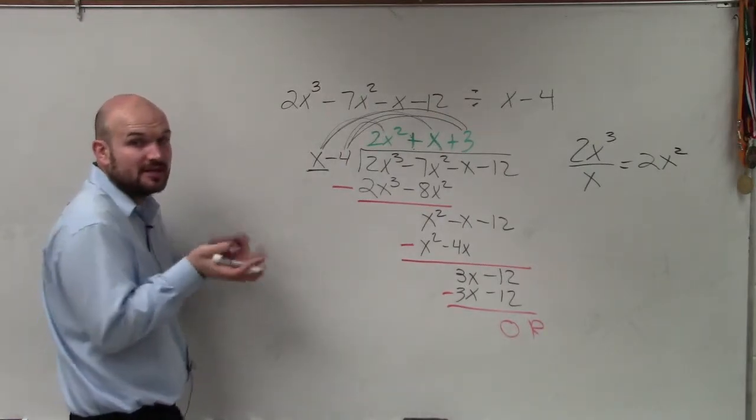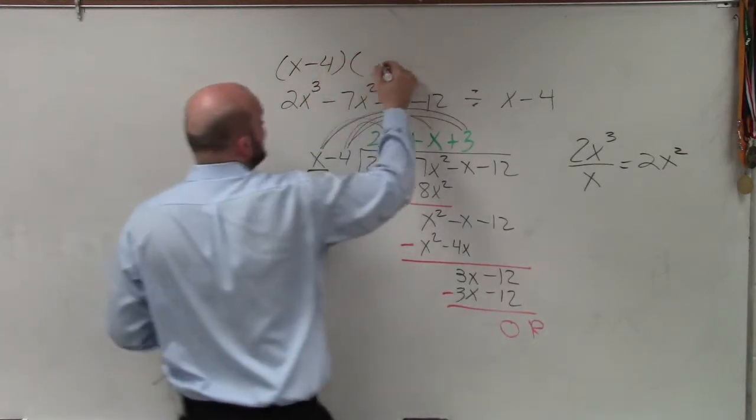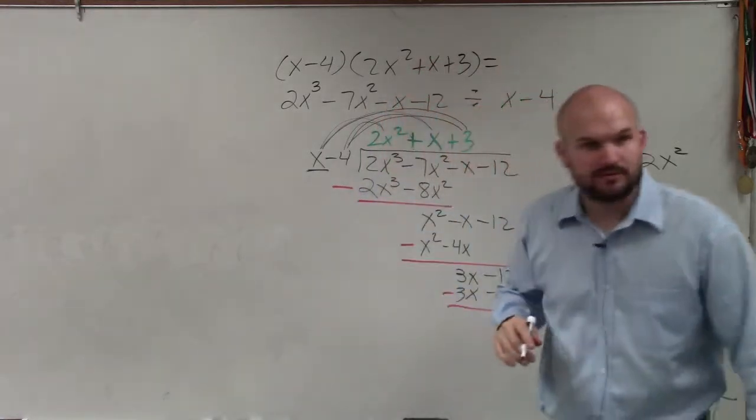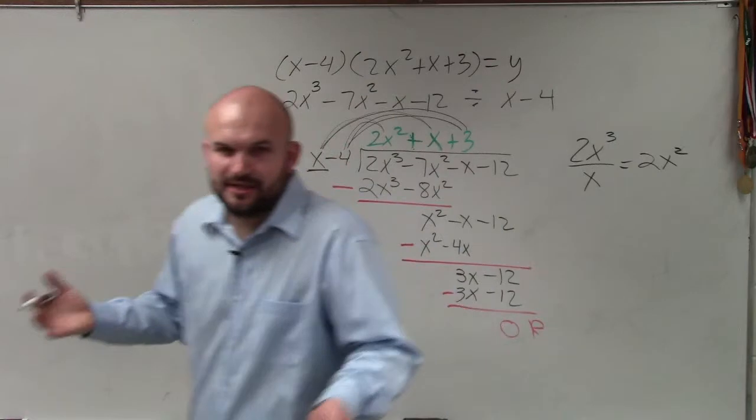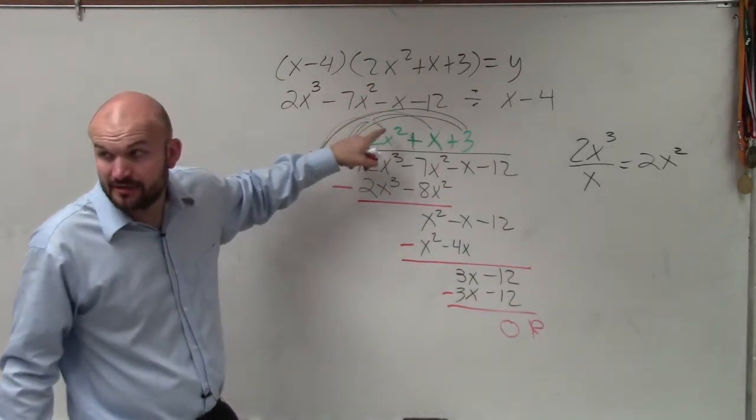So what I want you guys to understand, Ryan, is x minus 4 times our quotient equals our polynomial. Right? It really is like the same thing as equaling y, basically. Right? This equals this polynomial. Does everybody agree with me? OK. Yes. Does everybody agree? Yes.